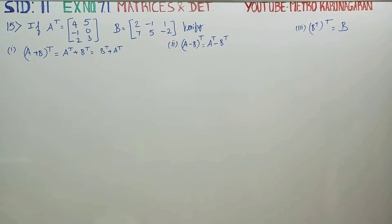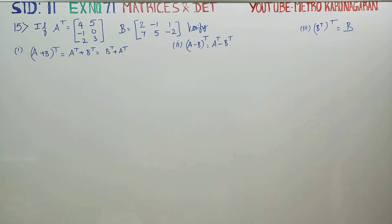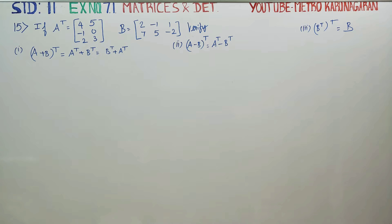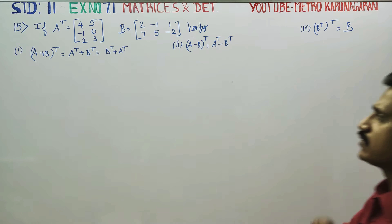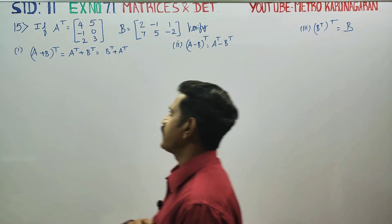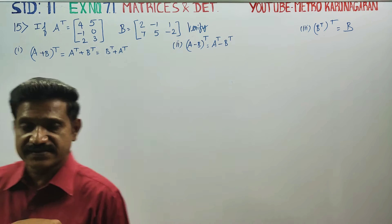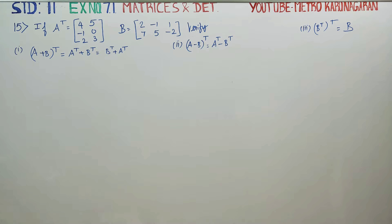Dear 11th standard students, in exercise number 7.21, sum number 15, if A transpose is equal to and B is equal to, you have to verify the results. A very simple problem.